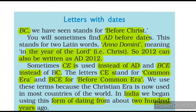BC means Before Christ. AD means Anno Domini — meaning 'In the Year of the Lord.' Dates after the birth of Jesus Christ are written as AD. For example, AD 2012 or AD 2021.